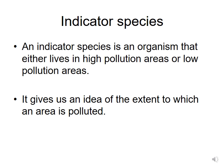An indicator species is an organism that either lives in high pollution areas or low pollution areas. They are specifically adapted to living in these two areas. This will give us an idea of the extent to which an area is polluted.